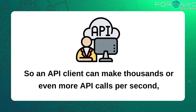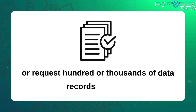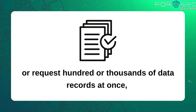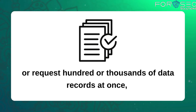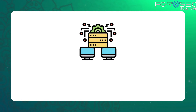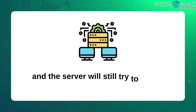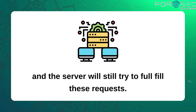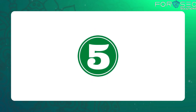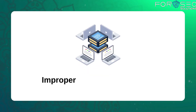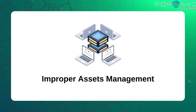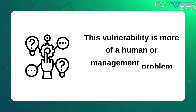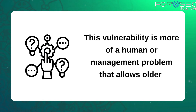An API client can make thousands or even more API calls per second, or request hundreds or thousands of data records at once, and the server will still try to fulfill these requests. The fifth is improper assets management — a vulnerability that is more of a human or management problem.